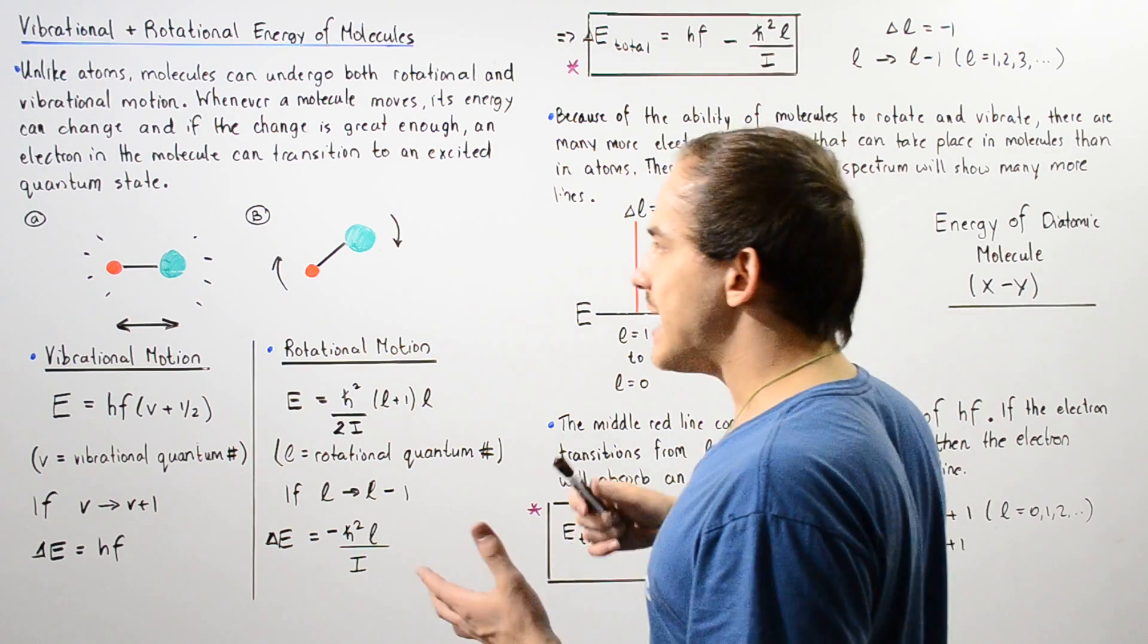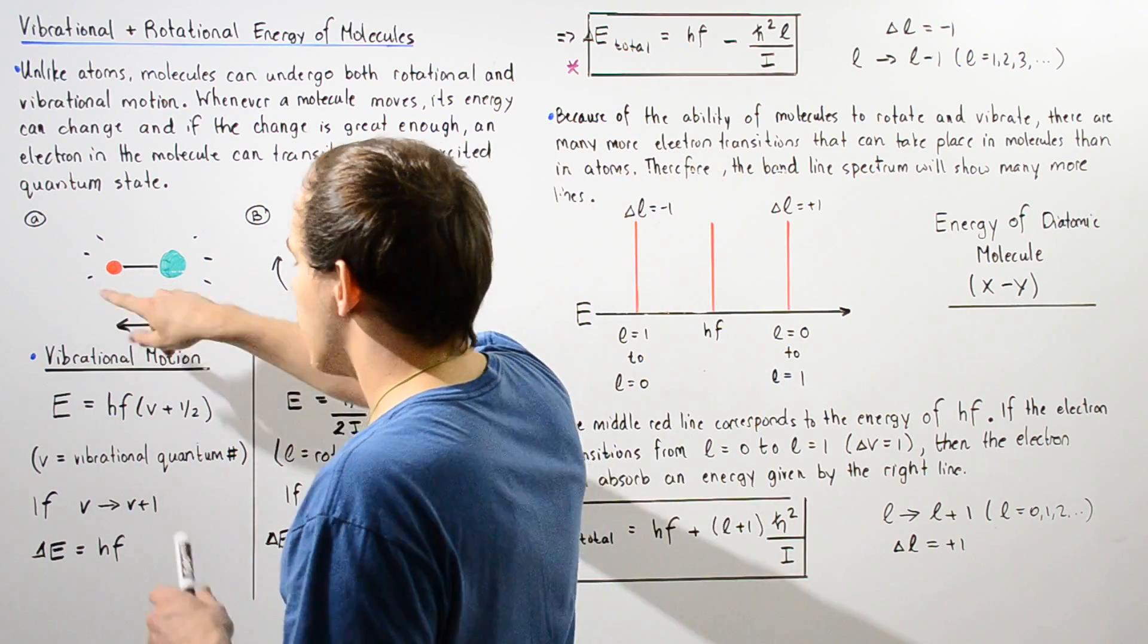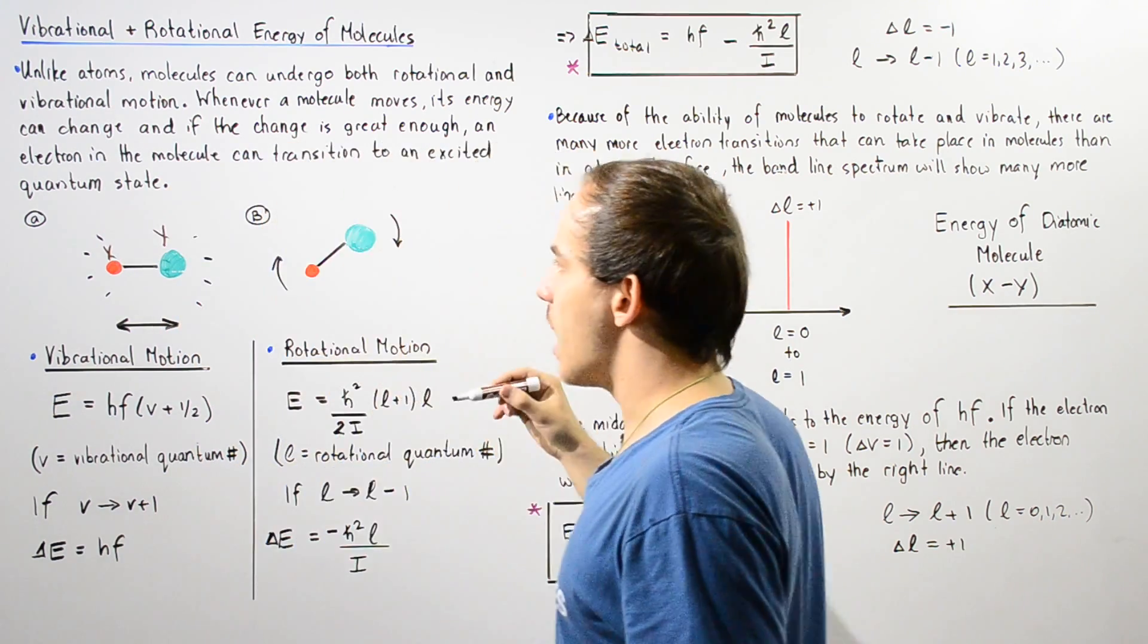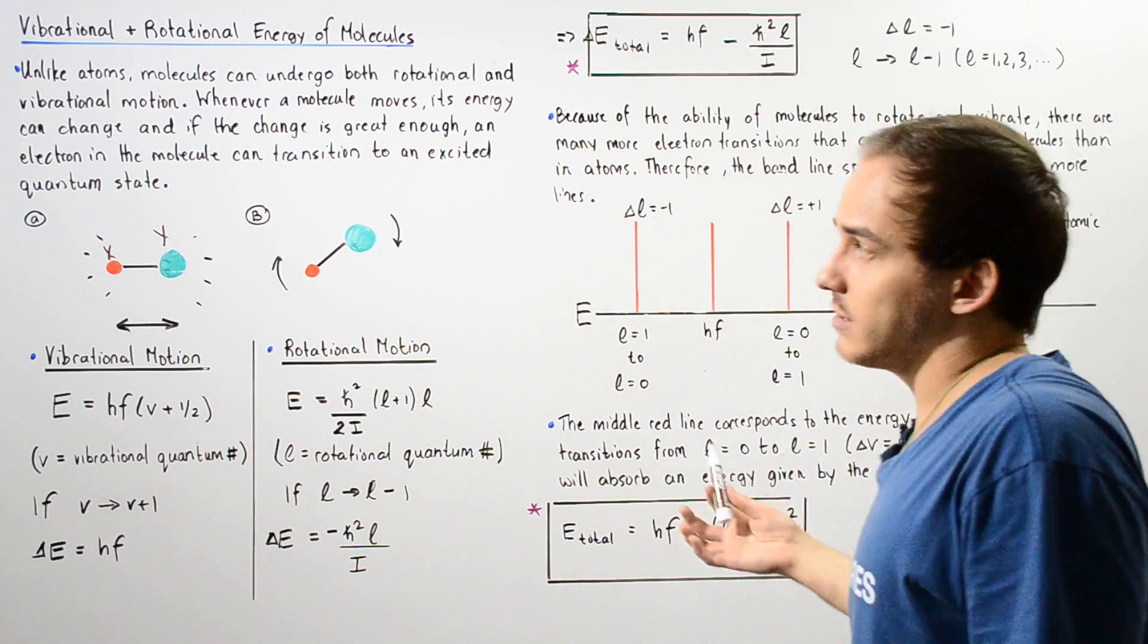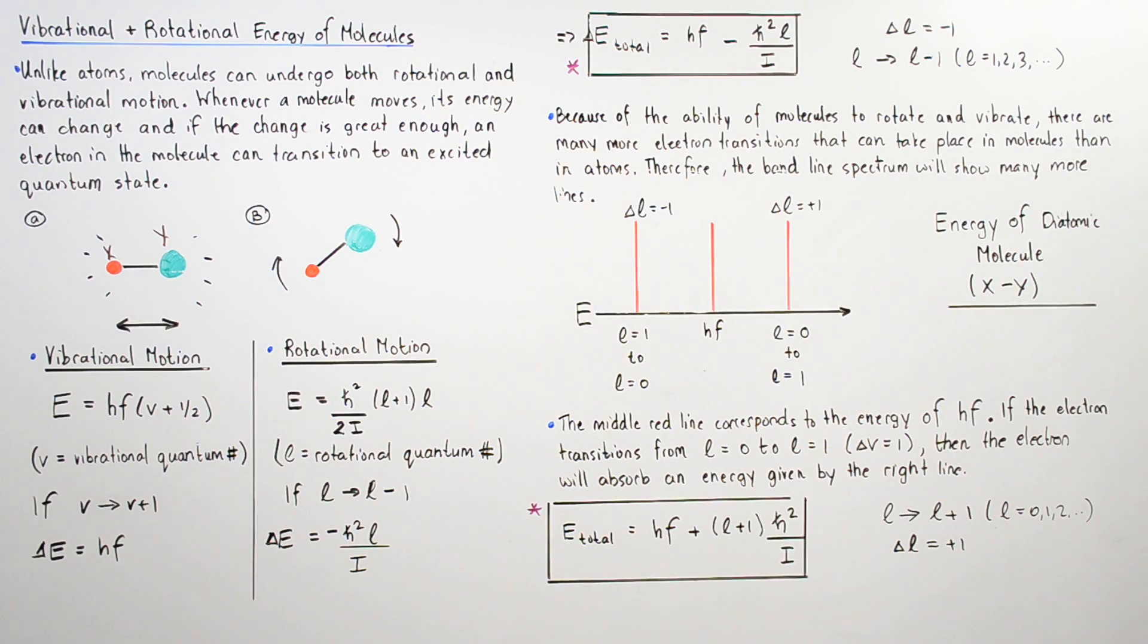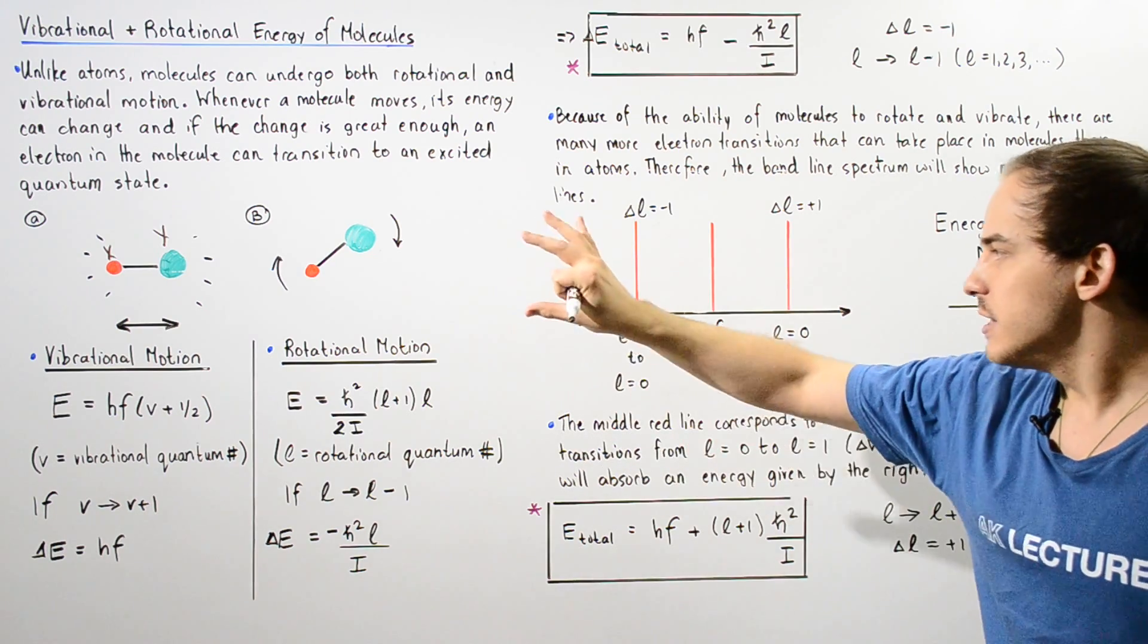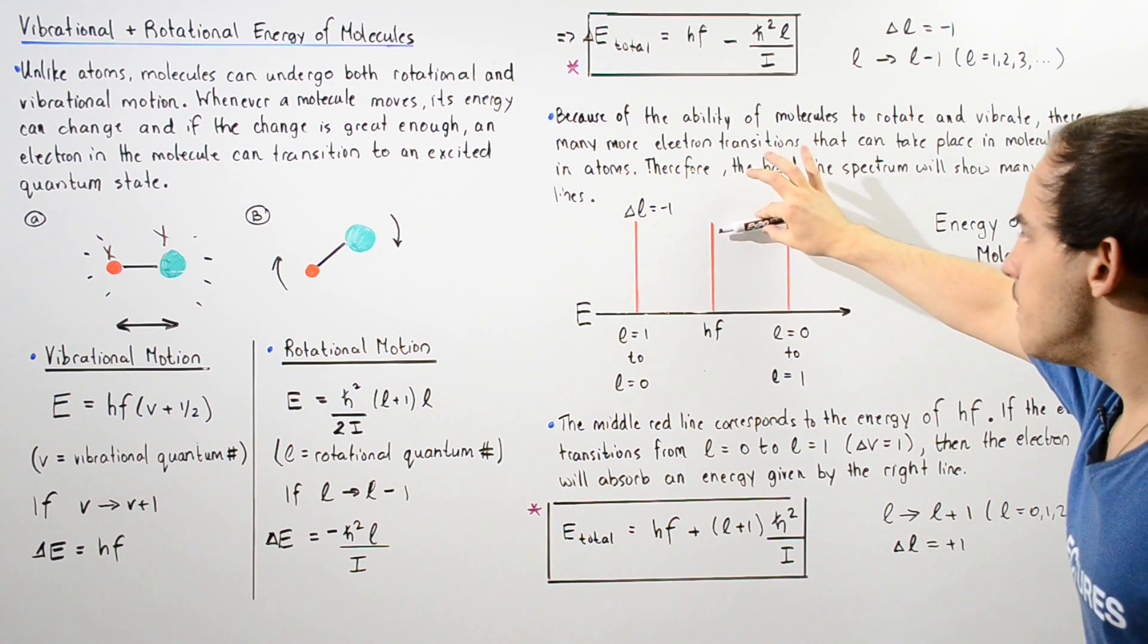So let's suppose we take some particular diatomic molecules. So our red is given by let's suppose X and our Y and our green atom is given by Y. So X can be, for example, H and Y can be Cl. So we're examining, let's suppose, a hydrochloride molecule. So we basically have the X axis, which is our energy. And as we go from this side to this side, our energy increases.